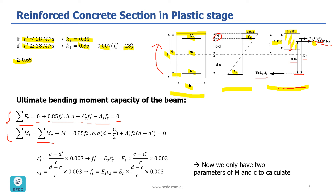For the bending moment, the second formula is sigma M_internal equals sigma M_external. We take the bending moment about the tensile reinforcement point. So: force in concrete times its lever arm — which is 0.85 f prime c times b times a — times (d minus a/2), plus force in steel reinforcement in compression times its lever arm (d minus d prime), equals M, which is the bending moment capacity we want to calculate. So we have two equations and need to simplify them to solve for M and c.